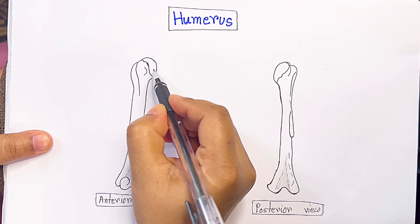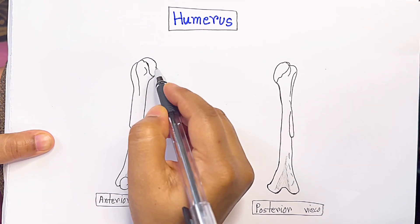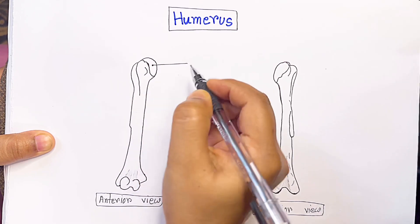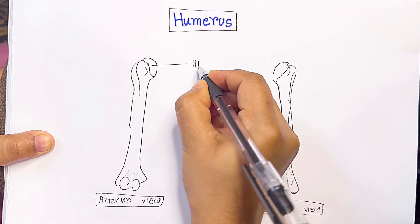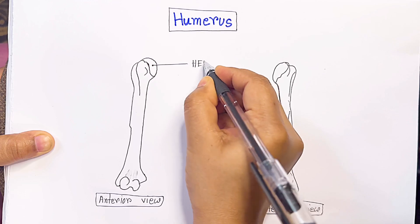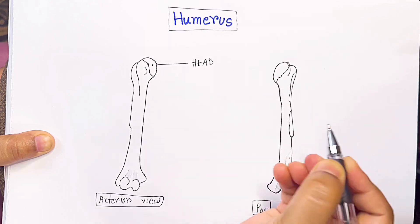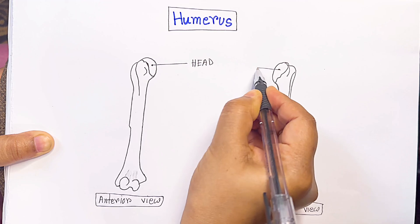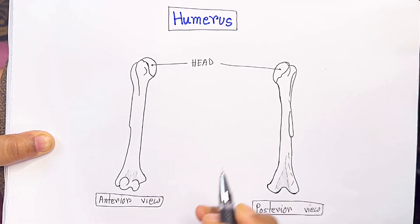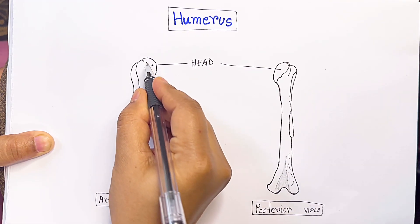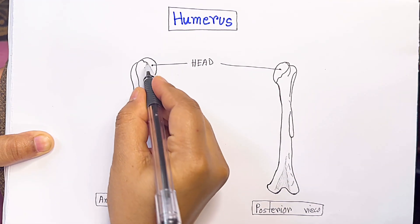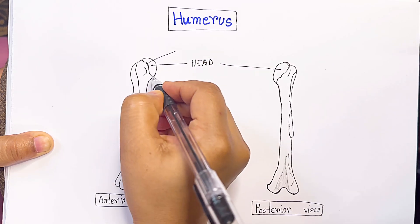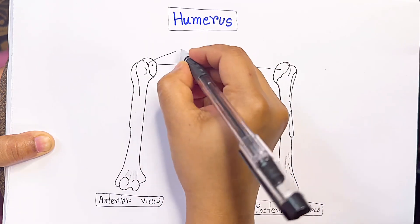This is the head of the humerus. This is the neck — this is the anatomical neck of the humerus.